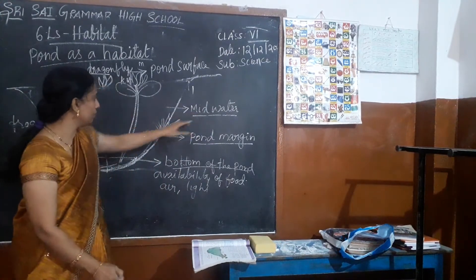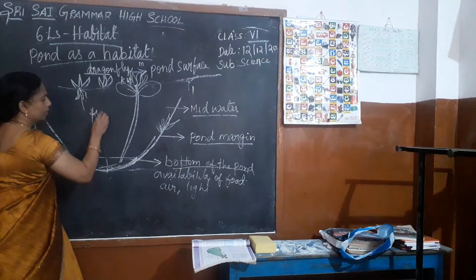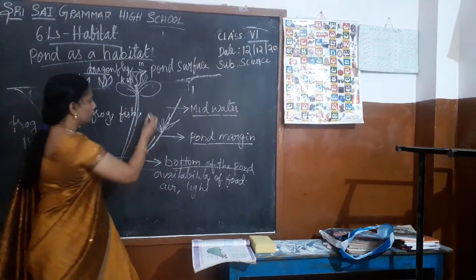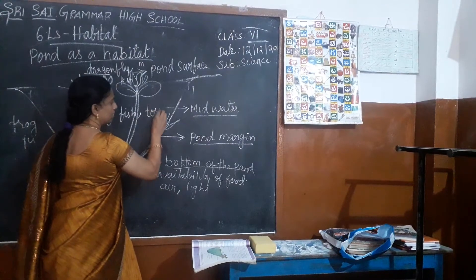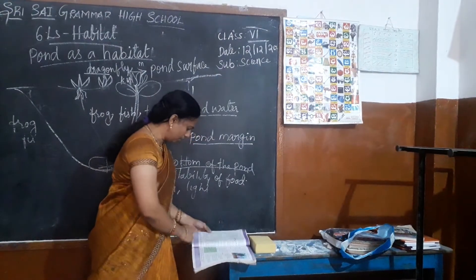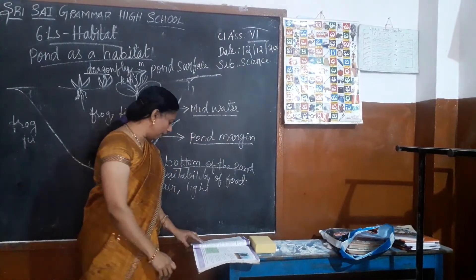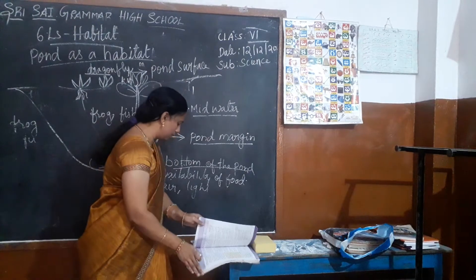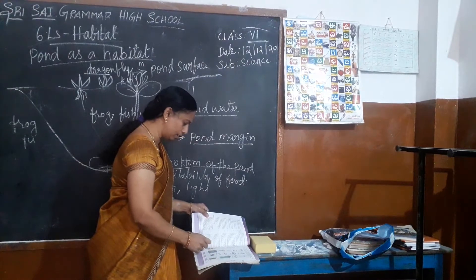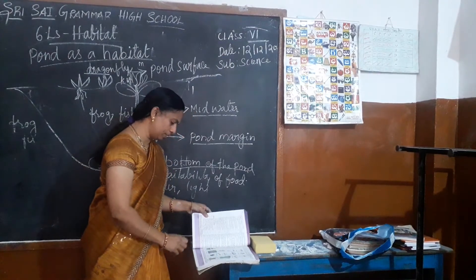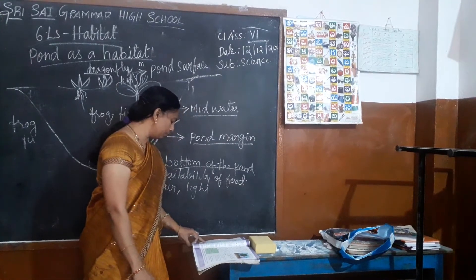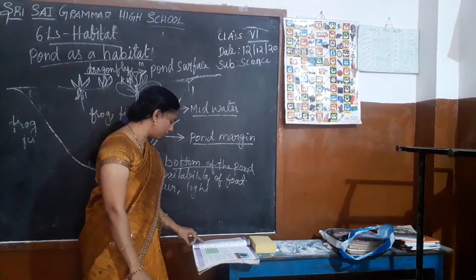In the middle of the water, we can see the frog, fish, and toads. You can also see the great water boatman. See the organisms here. Great water boatman, leech, and mosquitoes are found in the mid water.